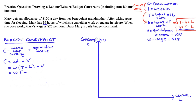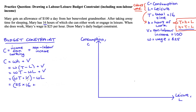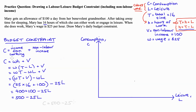Opening the brackets we get C equals W times T minus W times L plus V. Rearranging, C equals (W times T plus V) minus W times L. Leisure L is our horizontal axis variable and the other terms are all constants. Substituting in the values — W is 25, T is 16, V is 100 — we get C equals 400 plus 100 minus 25L, which reduces to C equals 500 minus 25L. So I've constructed the equation of our budget constraint.